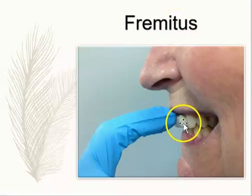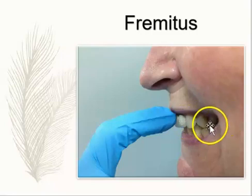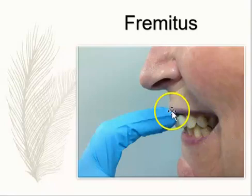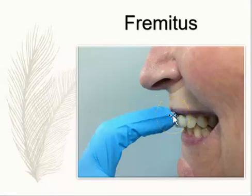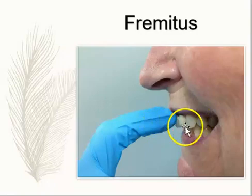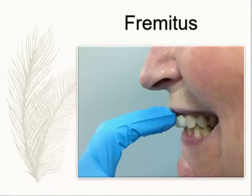Why does this happen? It could be because their bite is off. Perhaps just an occlusal adjustment — burring down some teeth or adjusting their bite — can help reduce the fremitus. Less commonly, ortho treatments might be needed to reduce fremitus. This vibration can be assessed on the maxillary anterior teeth.